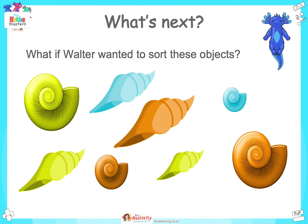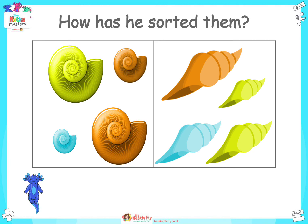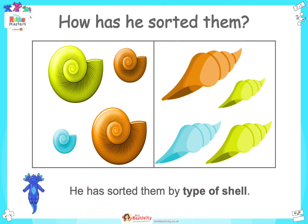What if Walter wanted to sort these objects? With a talk partner, write on a whiteboard how Walter could sort these objects. All the shells have been sorted — none have been left out. But this time there are only two groups. He has sorted them by type of shell.